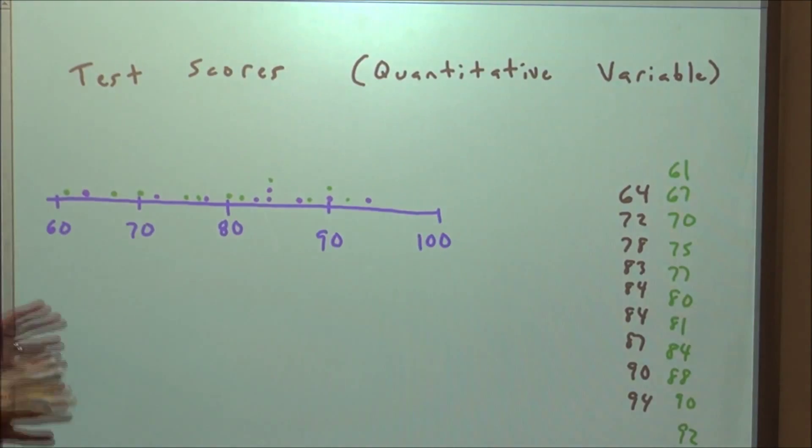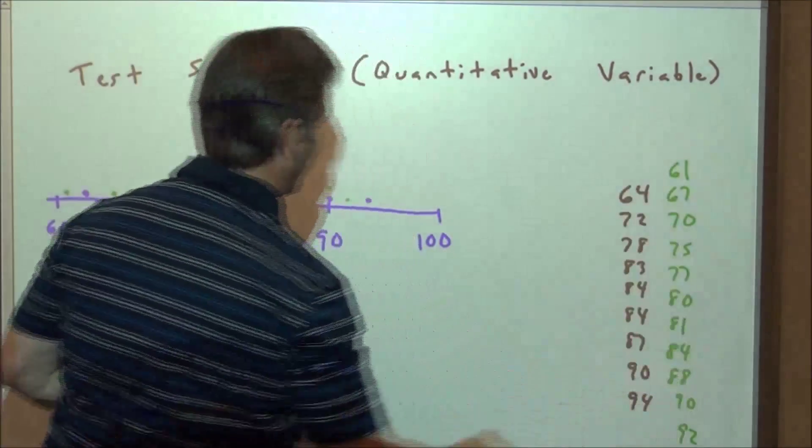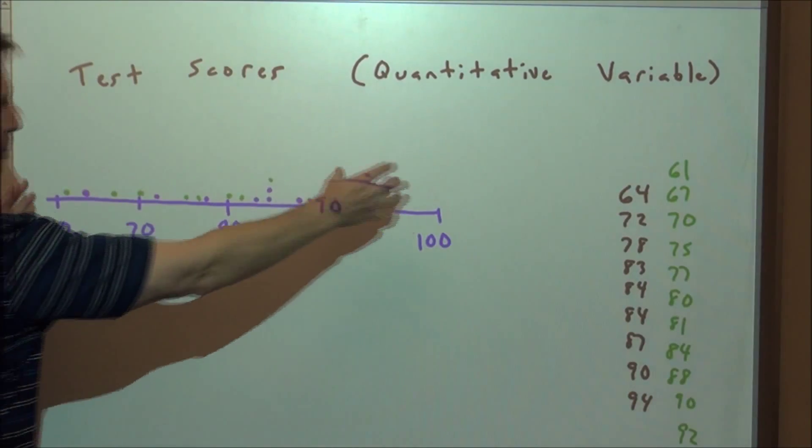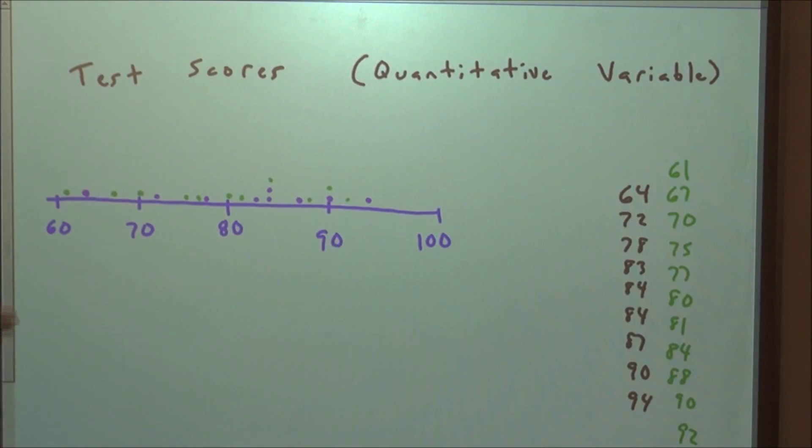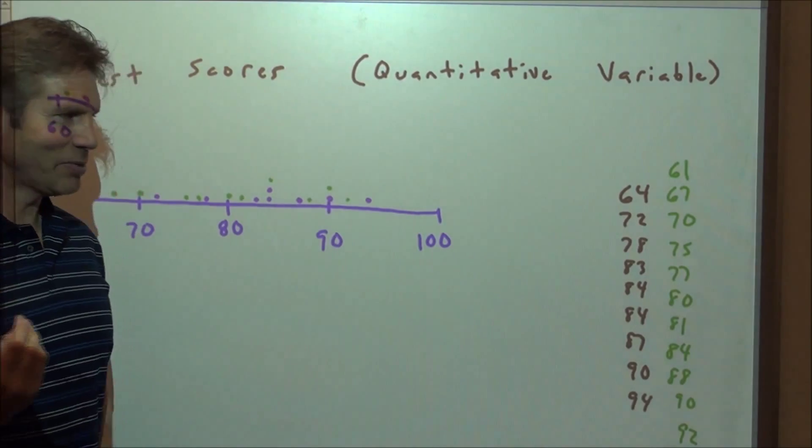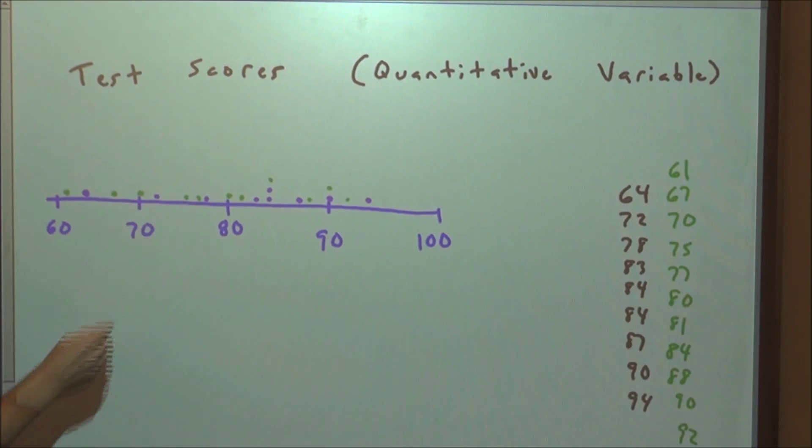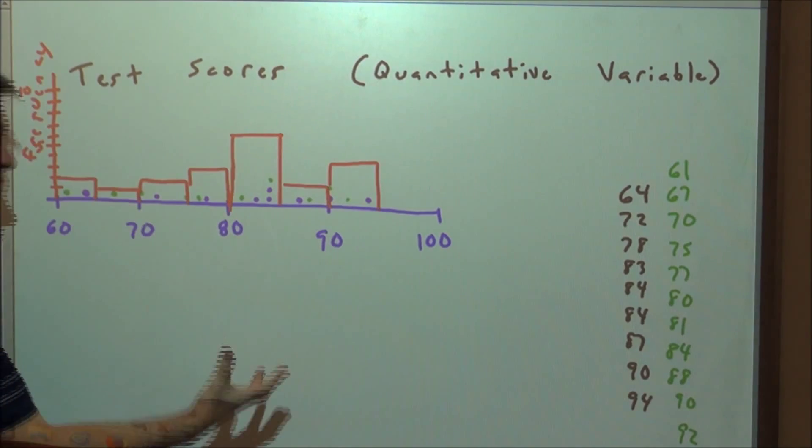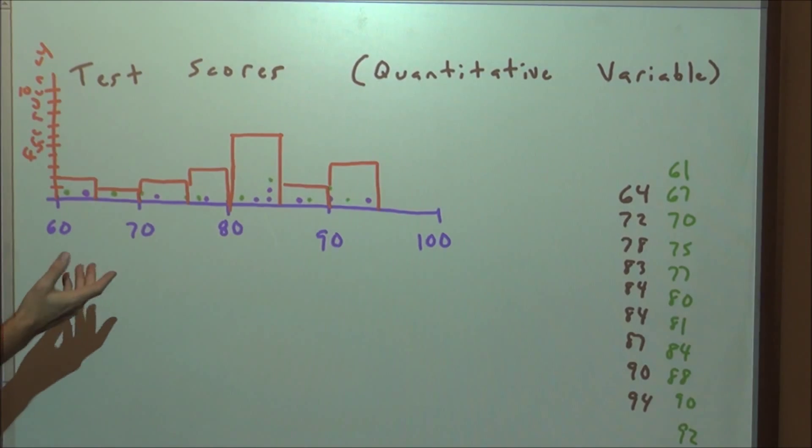Now, test scores. What if we added more test scores? Well, the dot plot would get more populated and it would look like that. Now, one of the things, really, it may seem simple, but we have to realize that we can go from a dot plot to a histogram by simply saying,